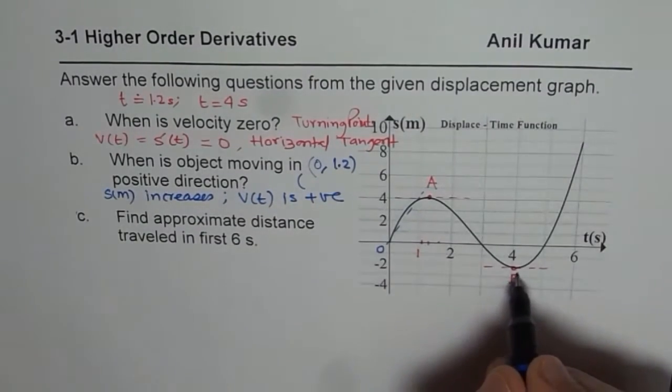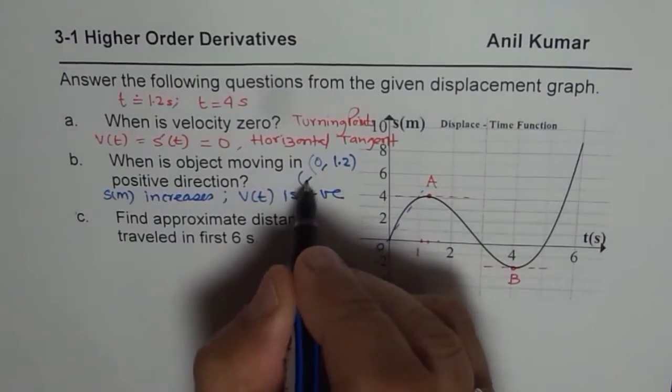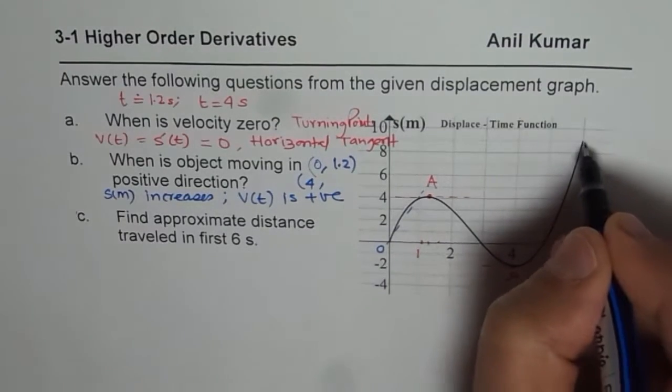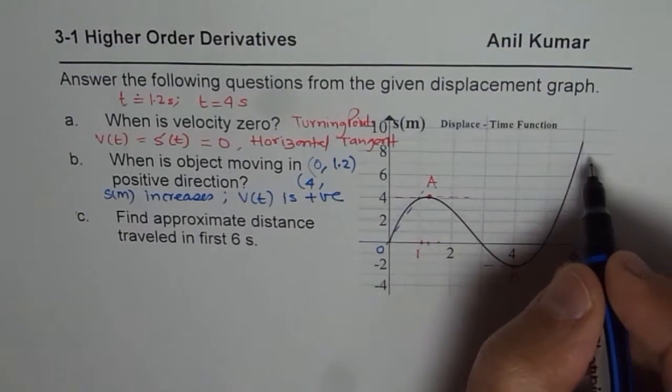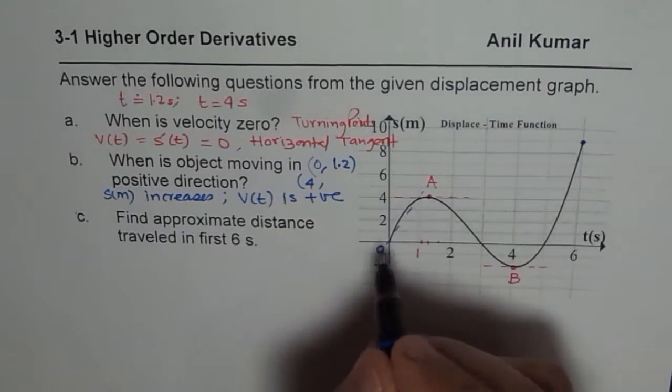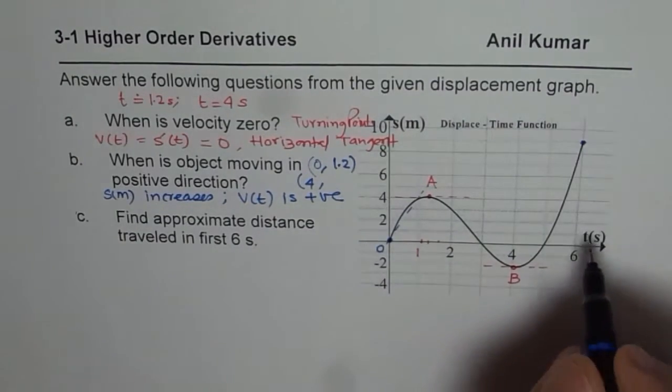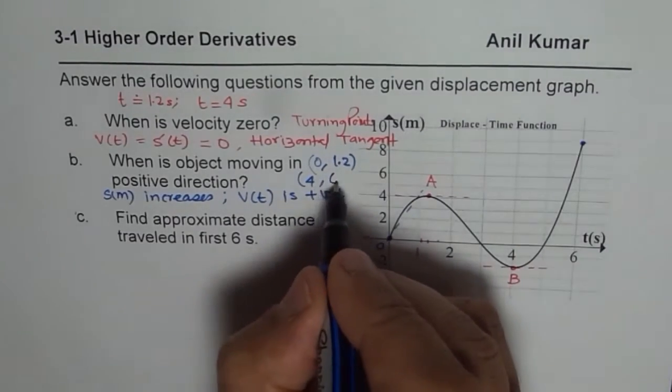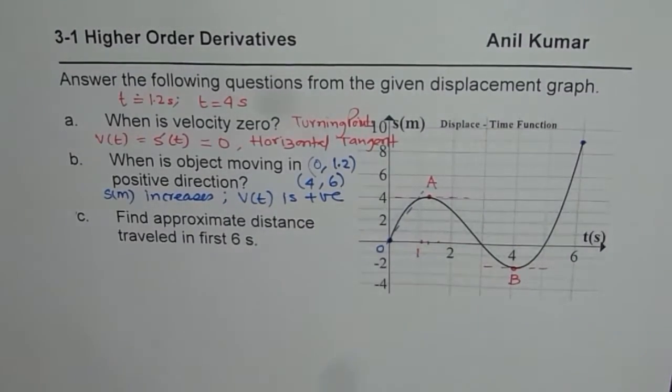And from B which is at 4 seconds to infinity. If this is an arrow here then infinity. If this point is like terminating here. So let me assume this to be terminating and starting from here. In that case I will write from 4 to 6. So that is how I can answer part B.